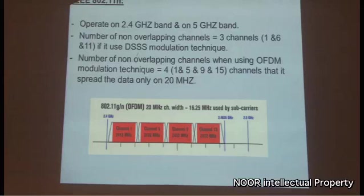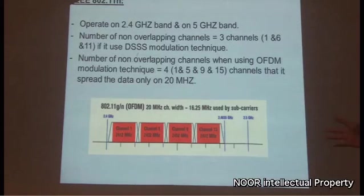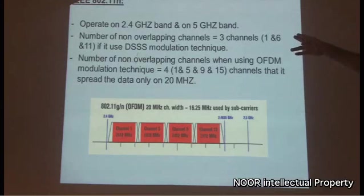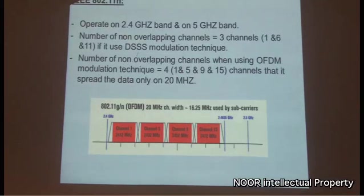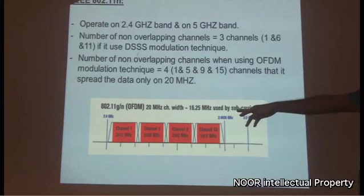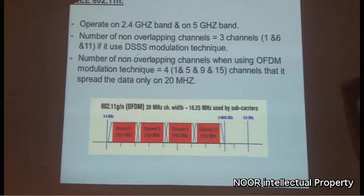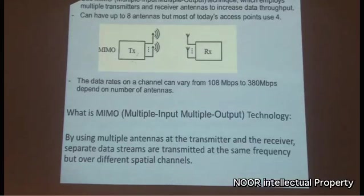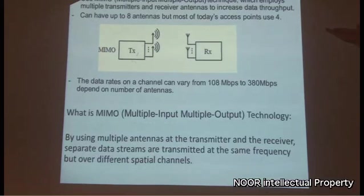IEEE 802.11n operates on both the 2.4 GHz and 5 GHz bands, configurable to either. The number of non-overlapping channels depends on the modulation technique: if DSSS is used, there are 3 channels (since DSSS spreads data over 22 MHz); if OFDM is used, there are 4 channels (since OFDM spreads data over only 20 MHz). The 802.11n standard uses the MIMO technique — Multi-Input Multi-Output.